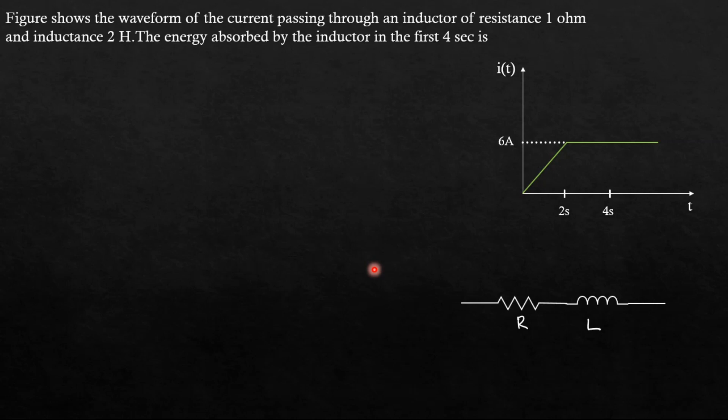There will be two components of energy: one is the energy dissipated in the resistor as heat energy, and the other is the energy absorbed or stored by the inductor. We will find both energies and their total will give the total energy absorbed by the inductor. Let us first find the energy stored in the inductance.